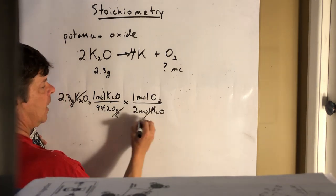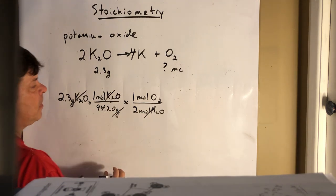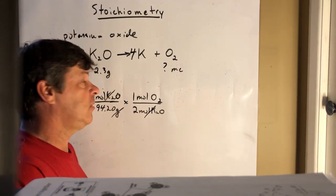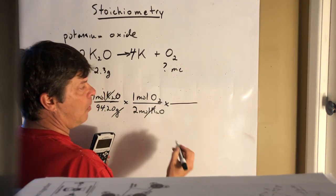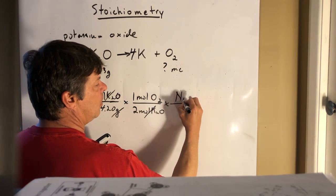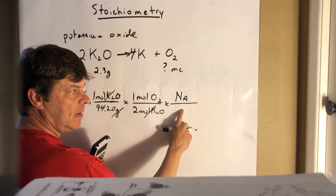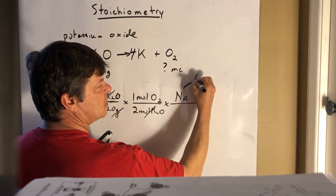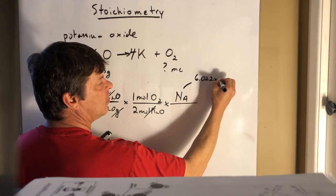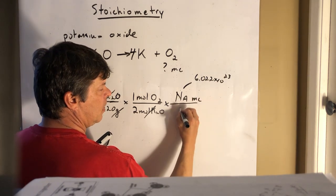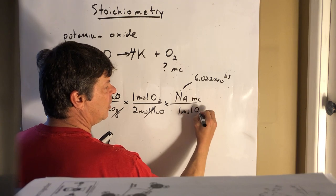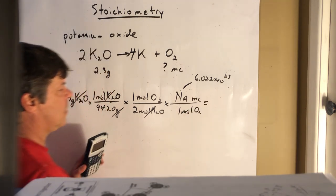But that cancels out. We could stop here, we'd have moles of oxygen. The problem says to get molecules of oxygen, so we want to then multiply by Avogadro's number. I'm going to use that as 6.022 times 10 to the 23rd. Just as a little shortcut, that's one mole of oxygen.